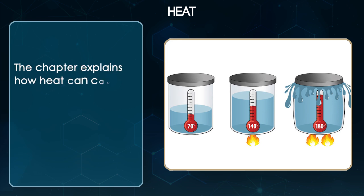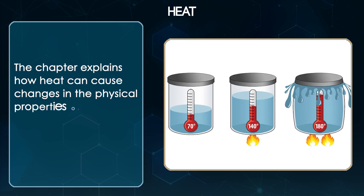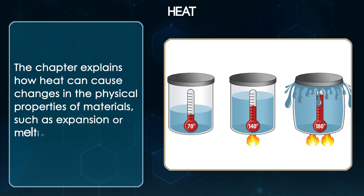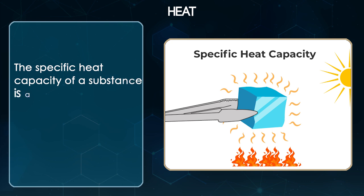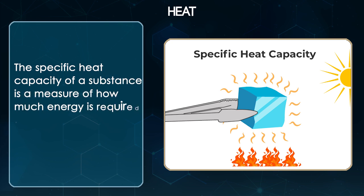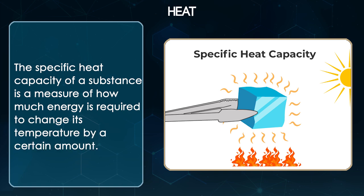The chapter explains how heat can cause changes in the physical properties of materials such as expansion or melting. The specific heat capacity of a substance is a measure of how much energy is required to change its temperature by a certain amount.